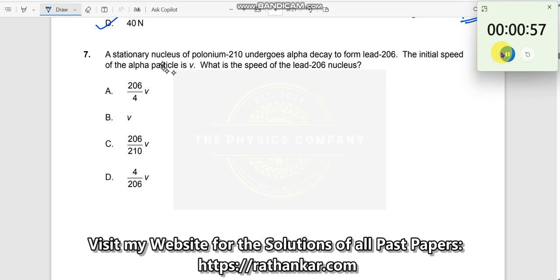Question number seven: A stationary nucleus of polonium-210 undergoes alpha decay to form lead-206. The initial speed of the alpha particle is v. What is the speed of the lead-206 nucleus?